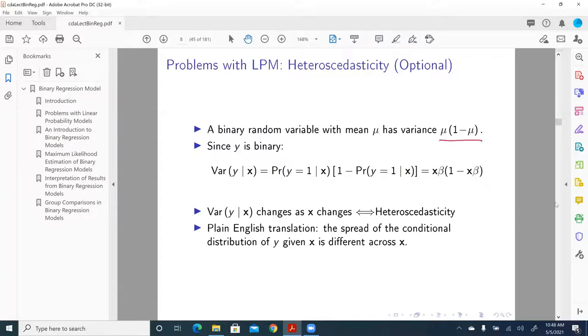Here we have a bit of derivation. Because the conditional Y conditional on X is a function of X and beta. Beta is a constant, but X varies. So we have heteroskedastic errors, or heteroskedasticity.